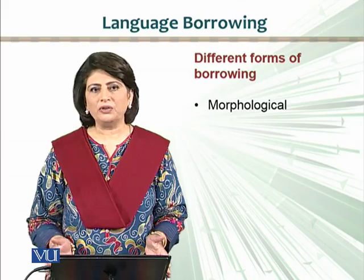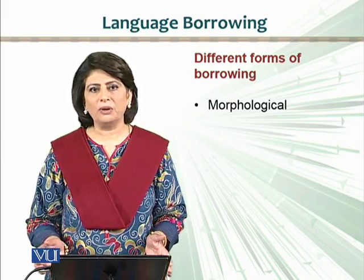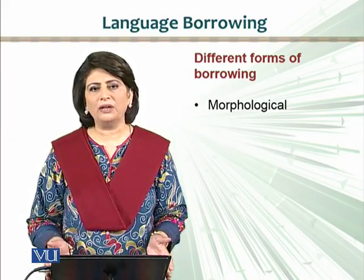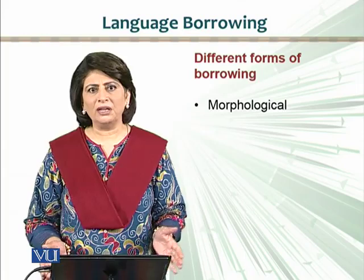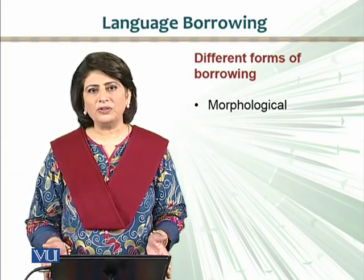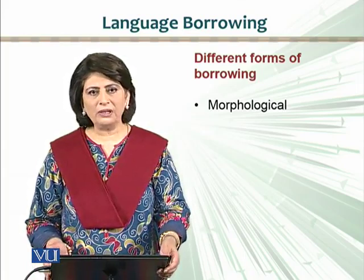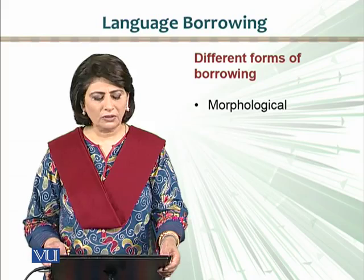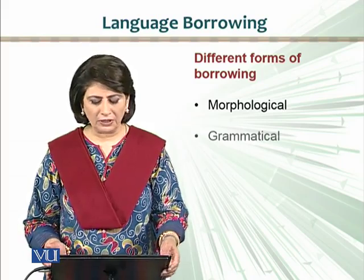For instance, 'road' is an English word and you use a morphological item from another language with it. Similarly, when you say 'table' with the morphological items 'ye' and 'noonhuna,' you are using the English word 'table' but applying morphological elements from another language.